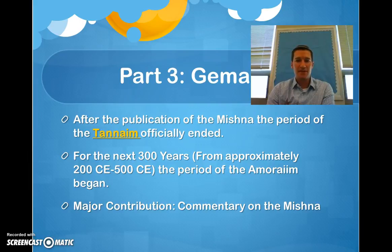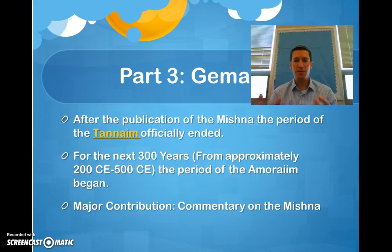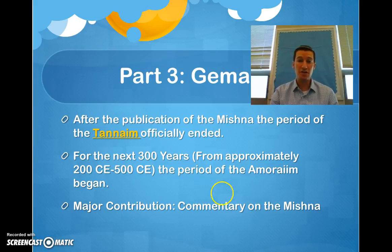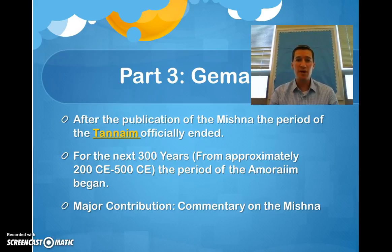After the publication of the Mishnah, the period of the Tanayim officially ended. If you were between the years 0 and 200 CE and recorded in the Mishnah or Midrashim, you were a Tanah. All the opinions found in the Mishnah are the Tanayim. As soon as the Mishnah was written down, for the next 300 years — from approximately 200 CE to 500 CE — the period of the Amorayim began. Their major contribution was writing a commentary on the Mishnah, otherwise known as the Gemara.